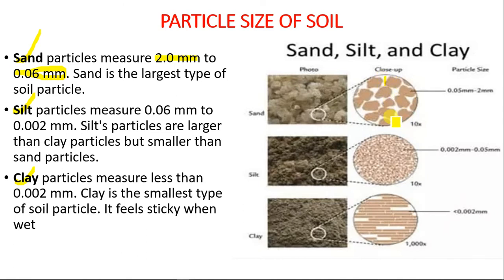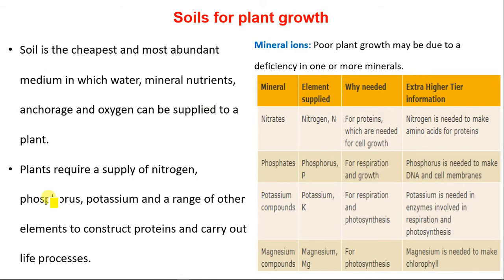Silt particles measure between 0.002 and 0.06 millimeters — silt particles are larger than clay particles but smaller than sand particles. Clay particles measure less than 0.002 millimeters; clay is the smallest type of soil particle and feels sticky when wet.